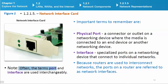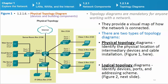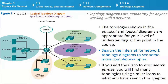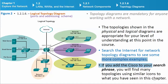Note that the terms port and interface are often used interchangeably. Topology diagrams are mandatory for anyone working with a network — they provide a visual map of how the network is connected. There are two types of topology diagrams: physical topology diagrams, which identify the physical location of intermediary devices and cable installation; and logical topology diagrams, which identify devices, ports, and addressing scheme. Search the Internet for network topology diagrams to see more complex examples. If you add 'Cisco' to your search phrase, you will find many topologies using similar icons to what you have seen in this chapter.